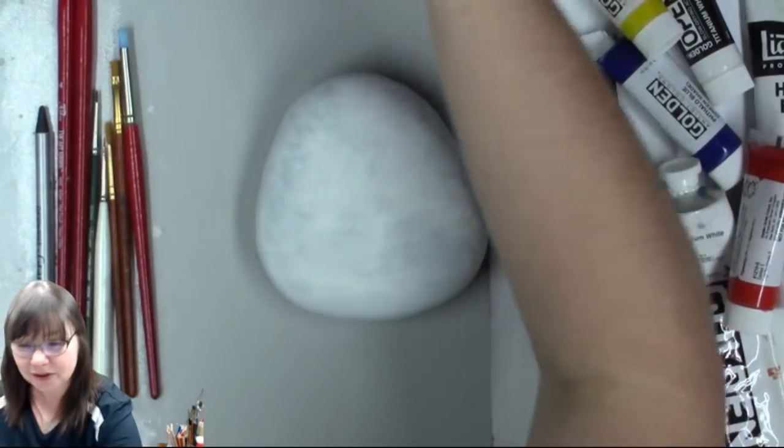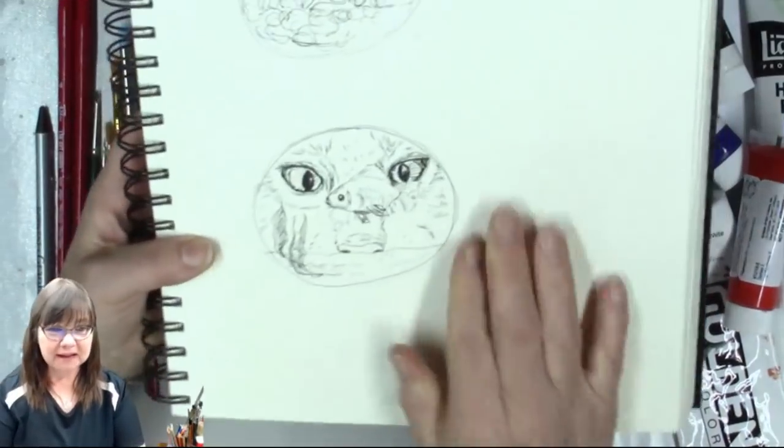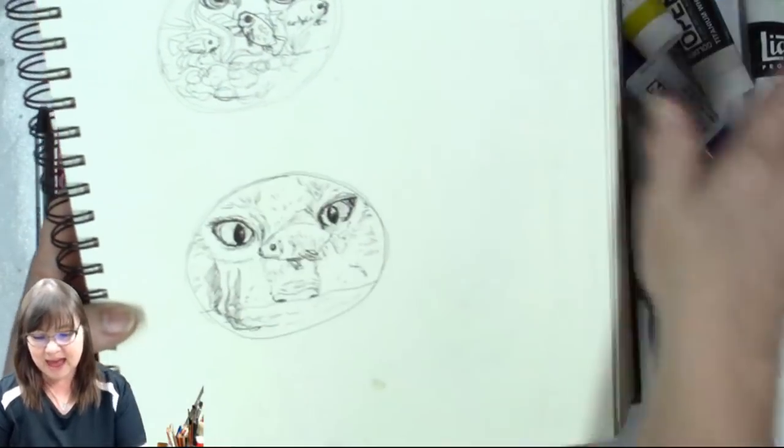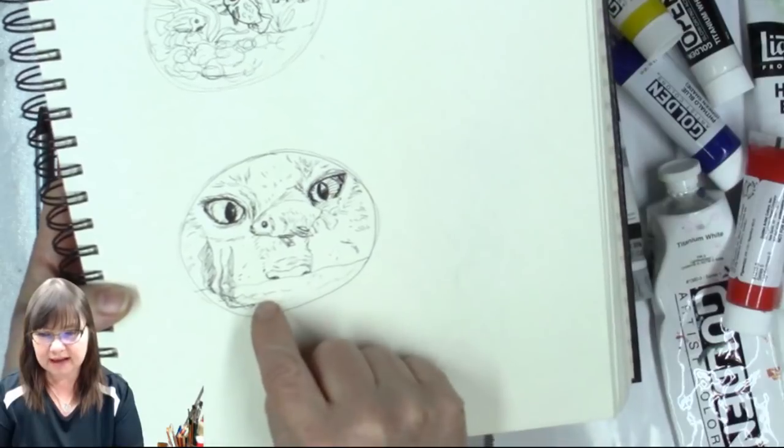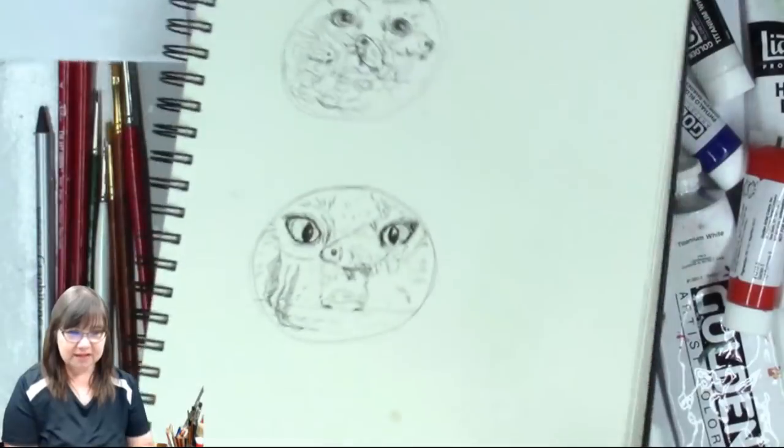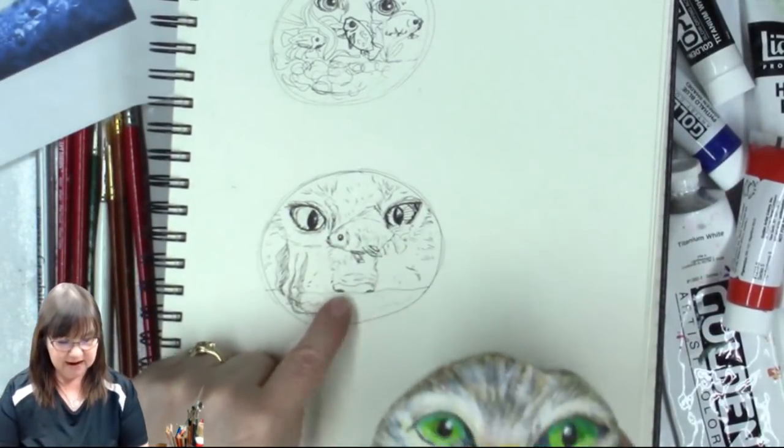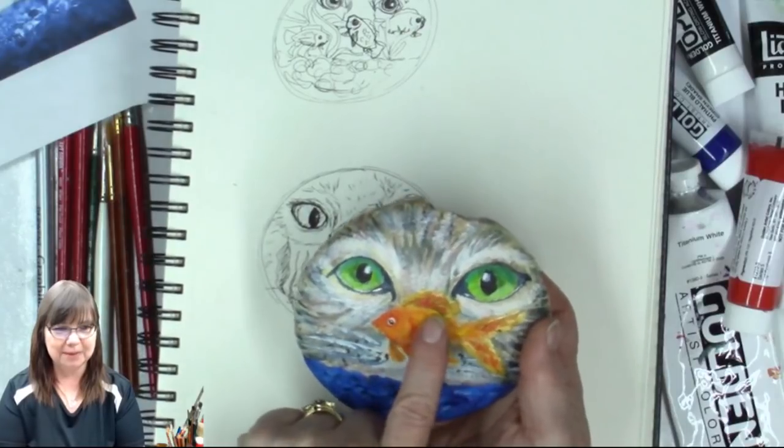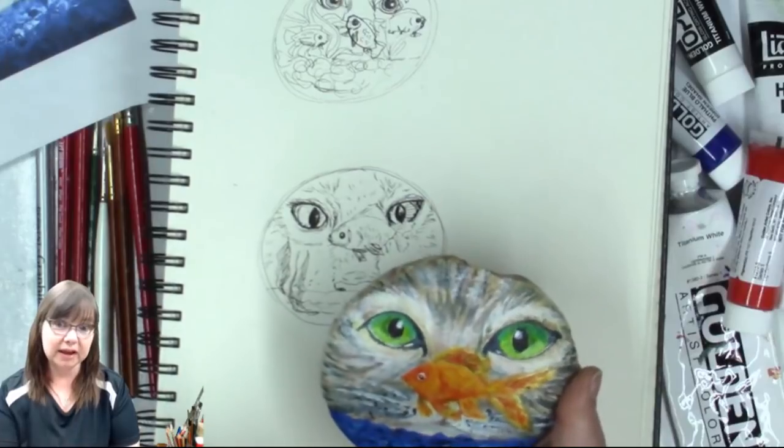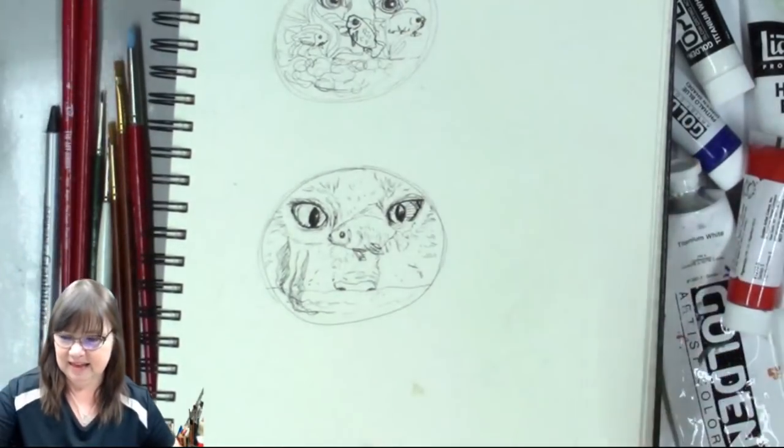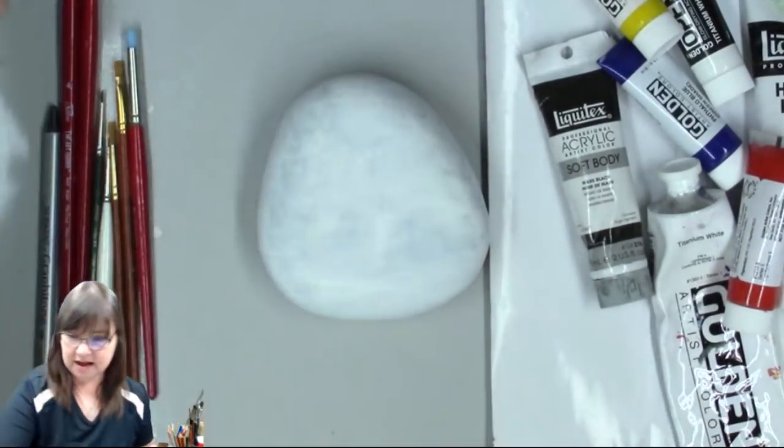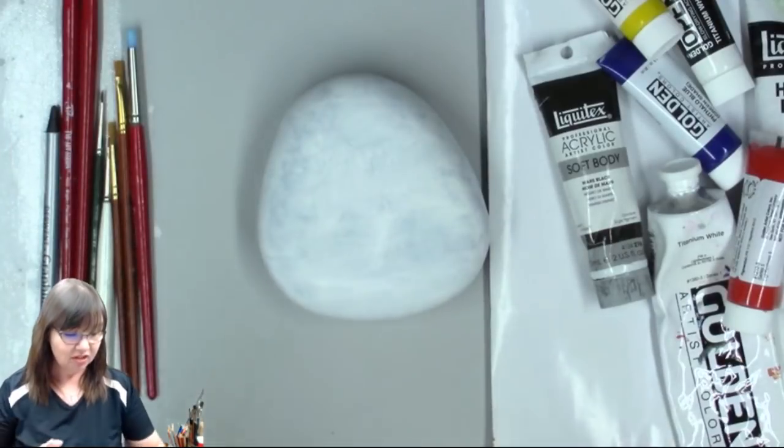I sketched out some different kitty cats doing the fishbowl thing. This is the one most like what I ended up painting. If you look at this one, the nose is all the way down here, and this one the nose is actually right up here behind the goldfish. I like how that turned out, so I'm going to be doing it similarly.